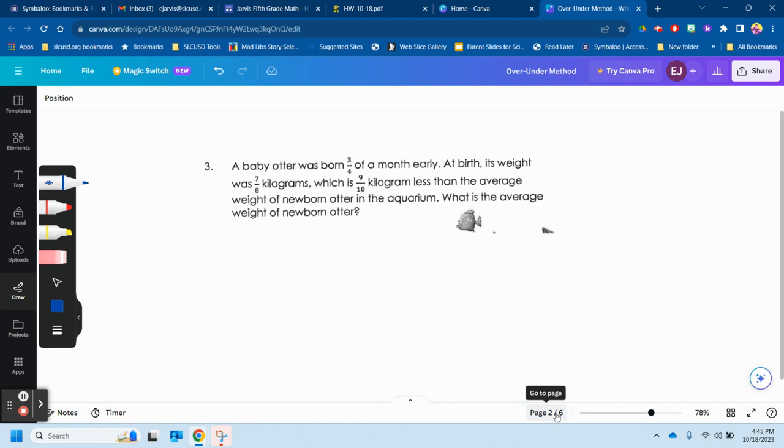So it's seven-eighths and that's nine-tenths less. So the average one weighs nine-tenths kilograms more than seven-eighths. So what I need to do is seven-eighths plus nine-tenths.